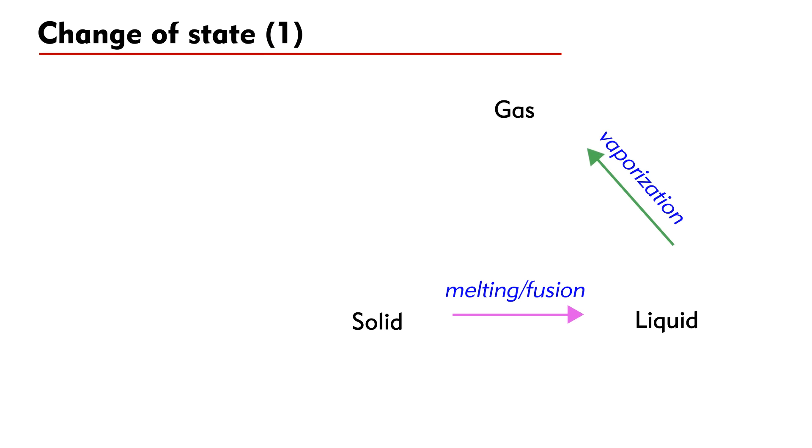A change from liquid to gas is called vaporization. When this occurs at boiling point, the process is called boiling. When this occurs below boiling point, the process is called evaporation.